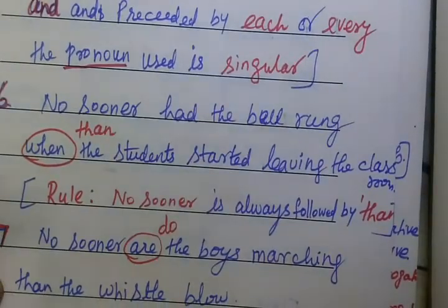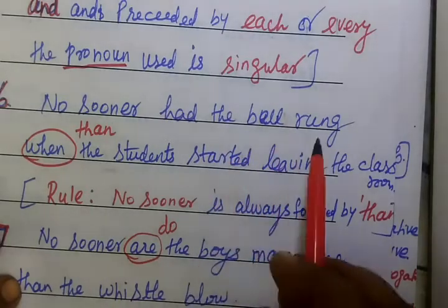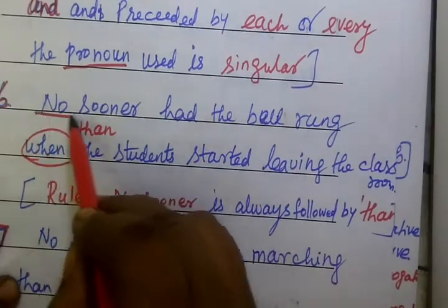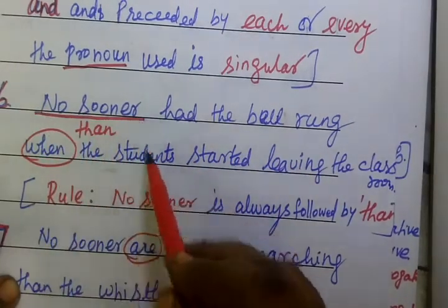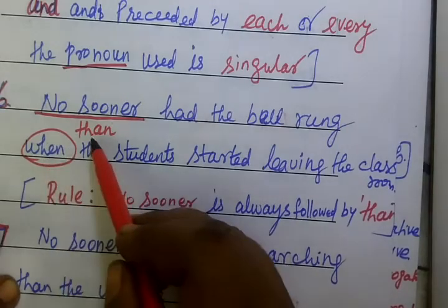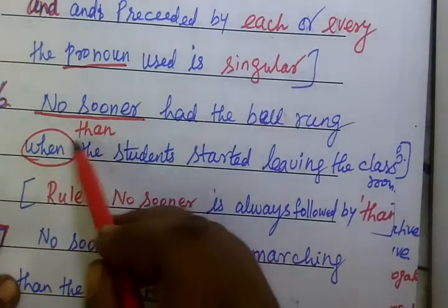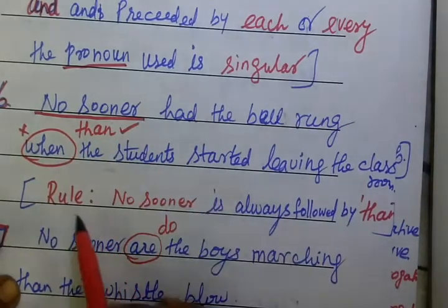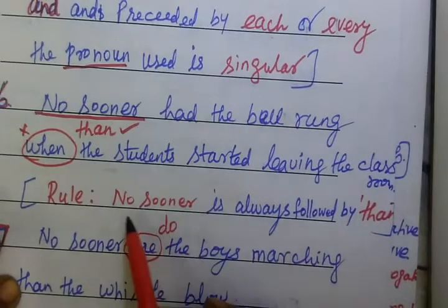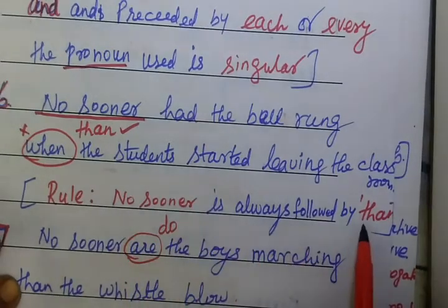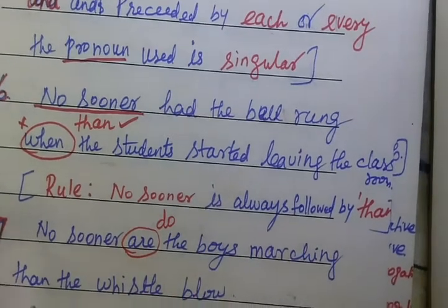Now the sixth one: No sooner had the bell rang. The rule is that 'no sooner' is always followed by 'than', not 'when'.